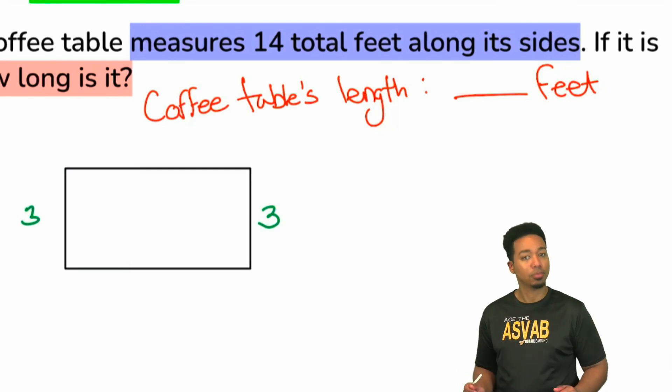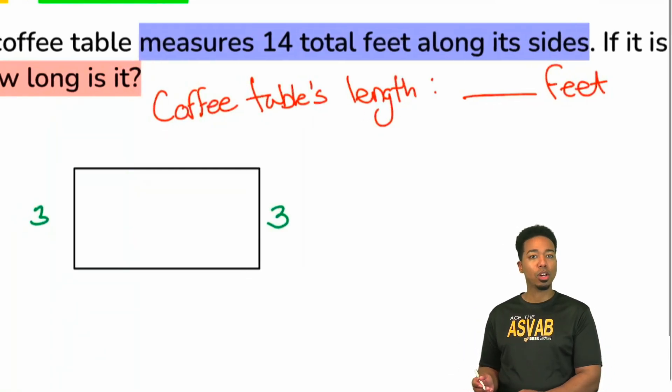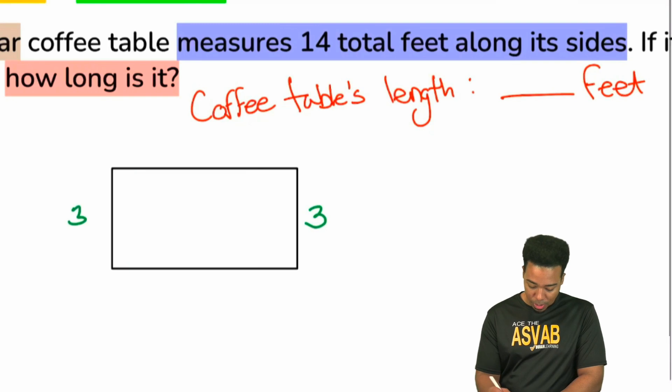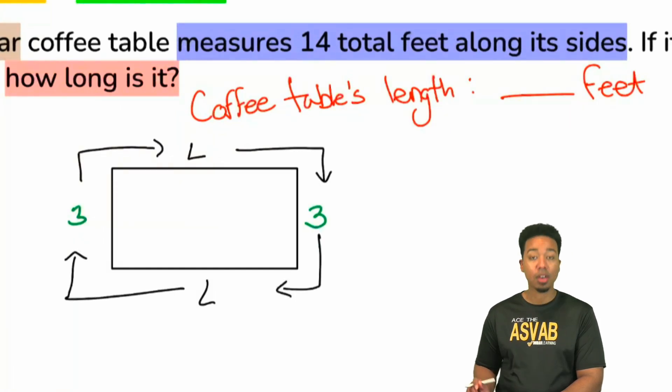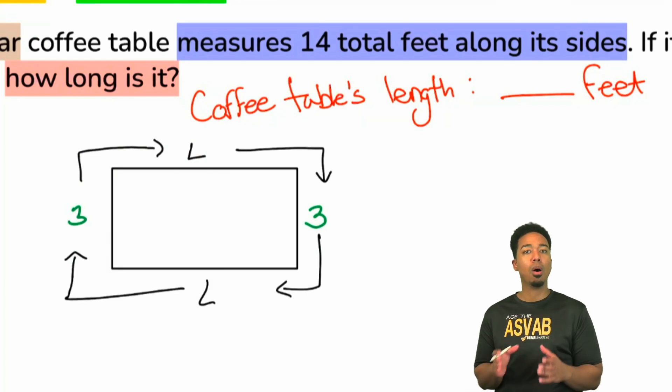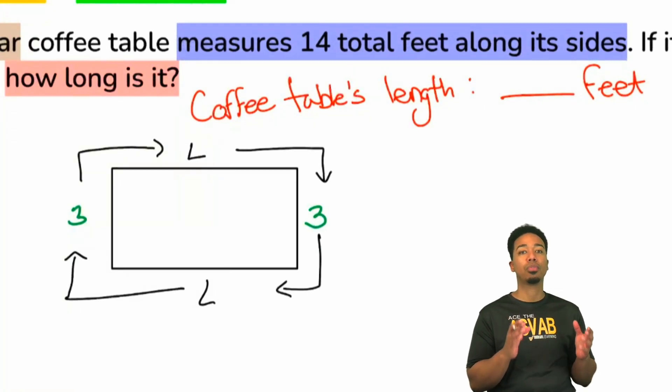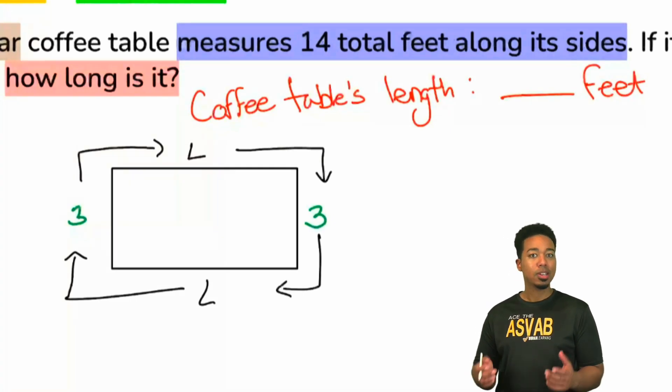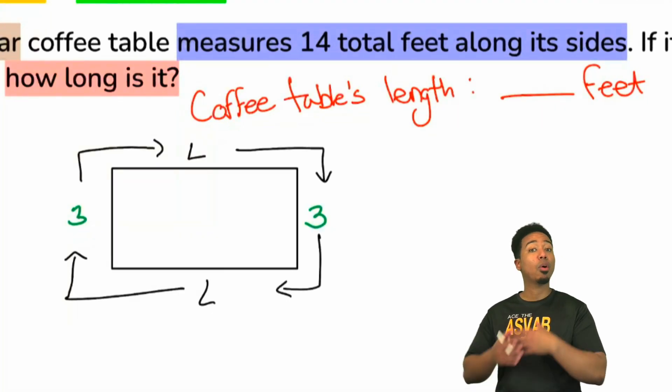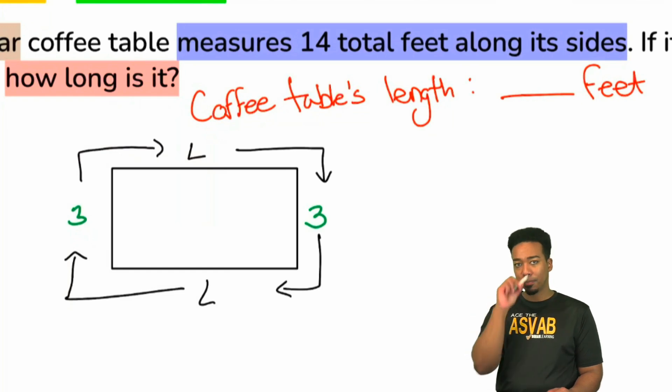So I'm going to agree with you all. Yes. 14 total feet along its sides means that if we go all the way around, because here's our length, if we go all the way around, we get 14. If we go all the way around, we get 14. So my party people, here's what this means. This means that if you understand what perimeter means, that we add up all the sides. Again, perimeter. We add up all the sides to get that 14.